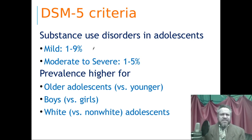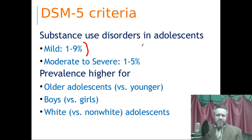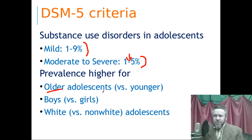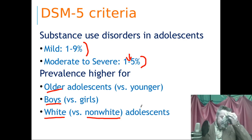About 1–9% of adolescents will meet DSM-5 criteria for substance use disorders; for moderate to severe, perhaps 2–3% though some studies find up to 5%. The prevalence is higher for older adolescents. Boys have historically been encouraged or at least tolerated in using alcohol more than girls. White individuals are more likely to meet criteria for substance use disorders than non-white individuals, which violates a lot of people's stereotypes, but the data seem fairly clear.